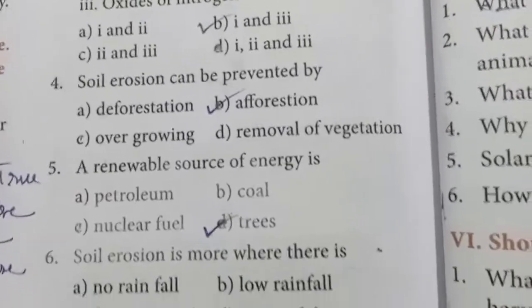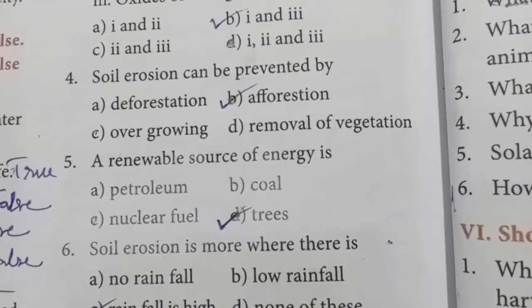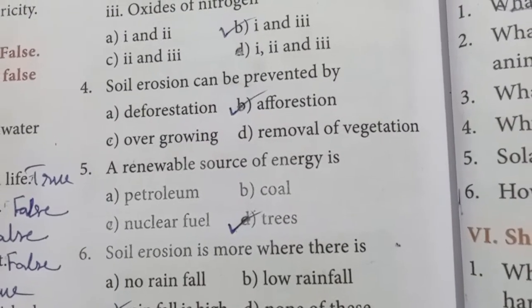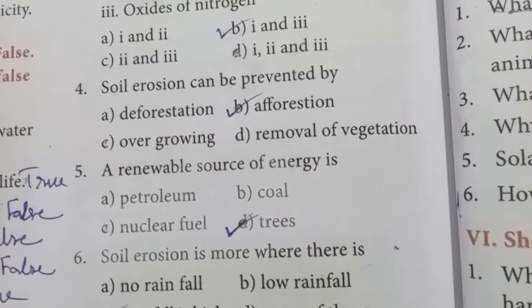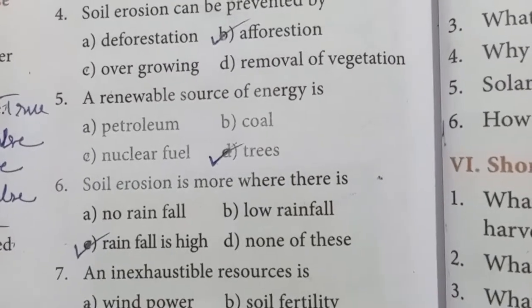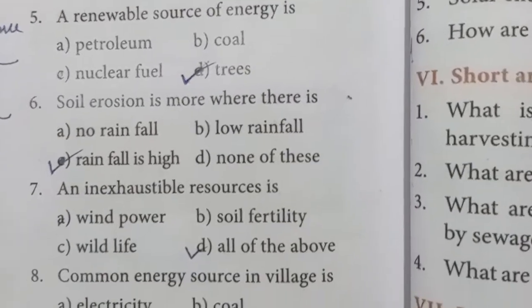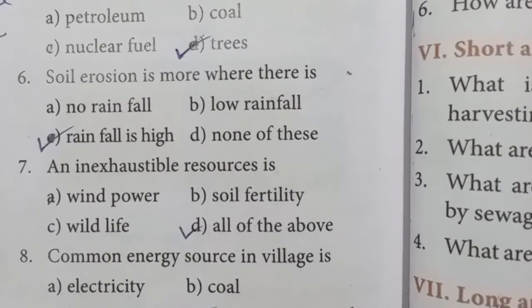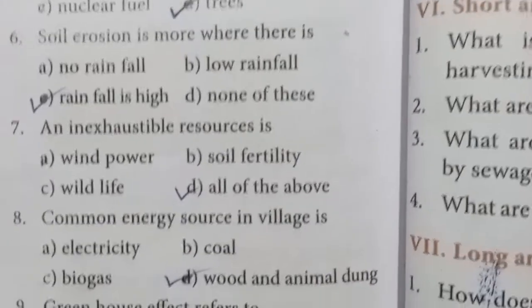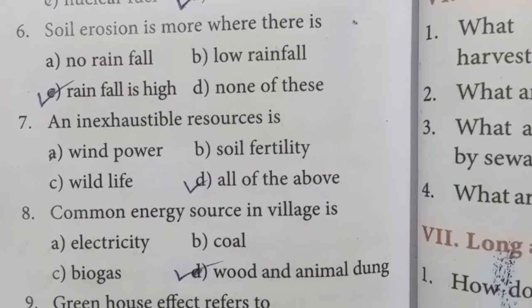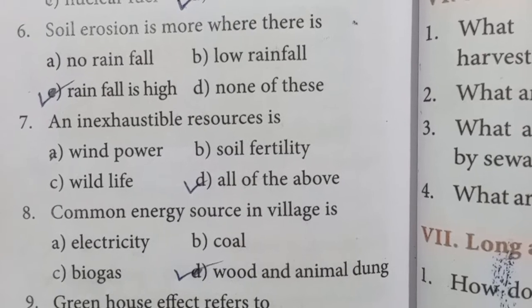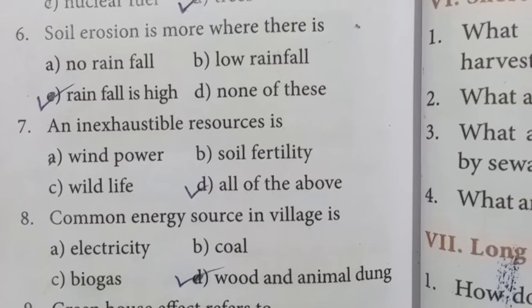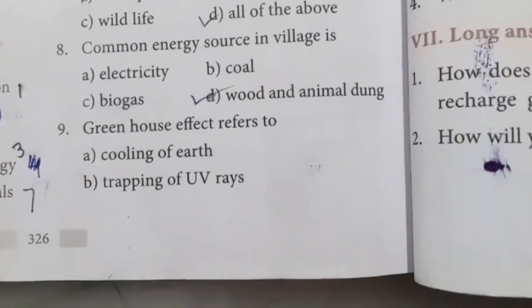Soil erosion can be prevented by afforestation — planting more trees in a particular area. A renewable source of energy — trees. Soil erosion is more where rainfall is high. Inexhaustible resources — wind power, soil fertility, and wildlife; all three are inexhaustible resources. Common energy source in villages — wood and animal dung.